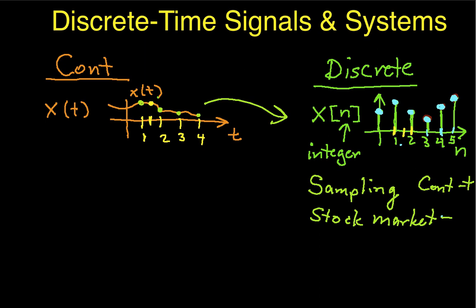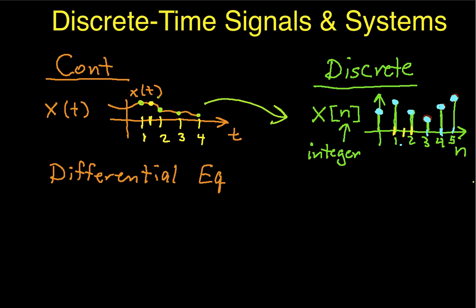There are some other differences, or a lot of differences then show up in terms of how I represent signals and systems. In continuous time signals and systems, I oftentimes will represent a system by a differential equation. For a discrete time system, I typically represent, or I can represent the dynamics of that system by what's called a difference equation.